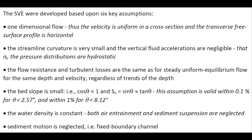Fifth, the bed slope is small. This assumption — sine theta equals tan theta and cos theta equals 1 — is valid within 0.1% for a slope less than 2.6 degrees, and within 1% for a slope less than 8 degrees. Sixth, the water density is constant and the sediment motion is neglected; we assume a fixed boundary channel.